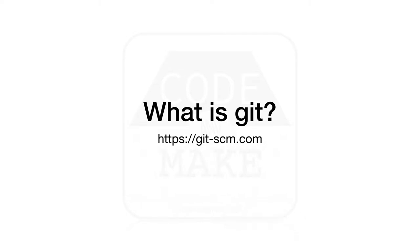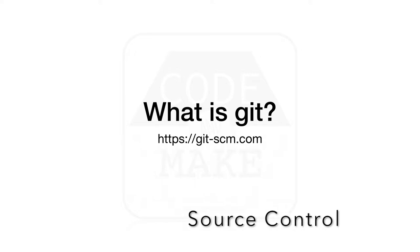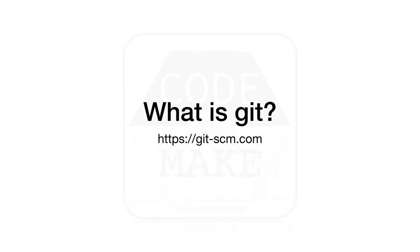Git is commonly used to manage source code files in software projects. Version control for software projects is sometimes referred to as source control. Git is the most powerful when used with text-based files such as source code. For text-based files, Git can show the differences between any two commits. In Git terminology, this comparison is known as a diff.